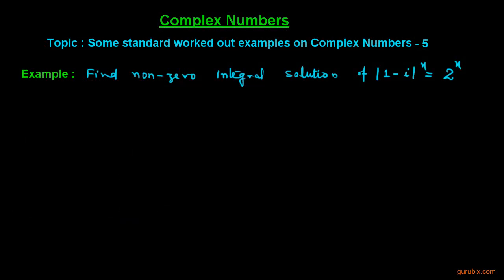Welcome friends. Let us solve another interesting example on complex numbers. The example is as follows: Find the non-zero integral solution of |1 - i|^x = 2^x.